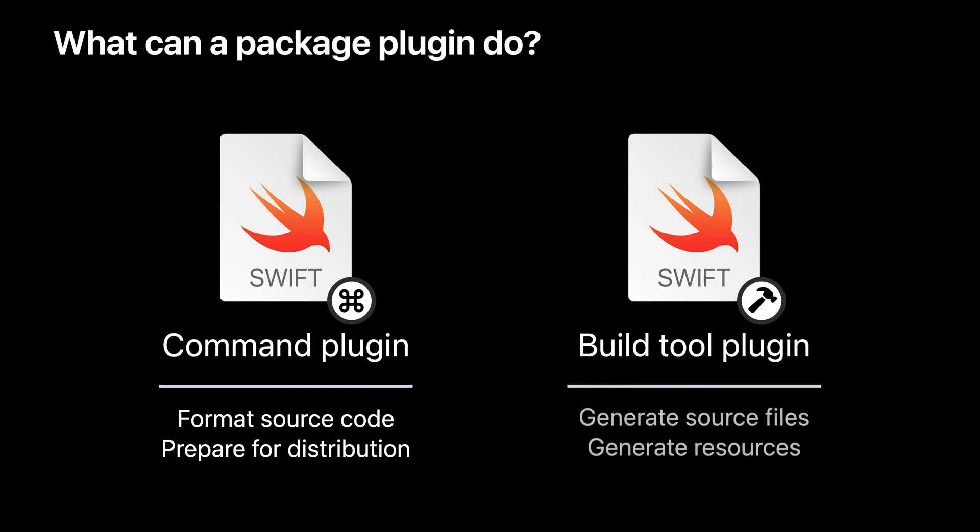Build tool plugins extend the build system's dependency graph. They're particularly useful for generating source code or resources as part of a build. Unlike command plugins, which are invoked for a whole package or project at a time, build tool plugins are applied to each target that needs them.